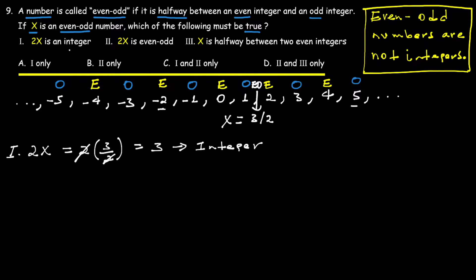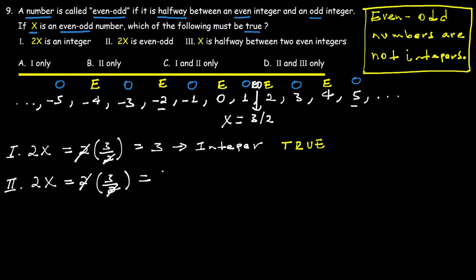Statement 1: 2x is an integer. We have 2x — evaluating this gives us an integer. Statement 1 appears to be true. For Statement 2, 2x is even-odd — even-odd numbers are not integers, and the result here is an integer, so Statement 2 is false.